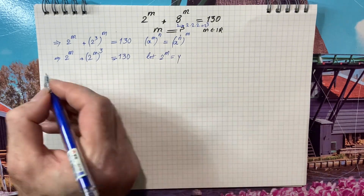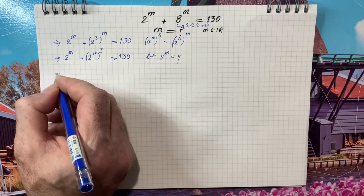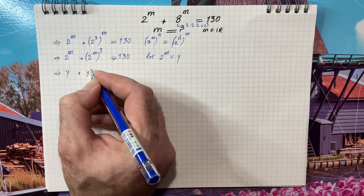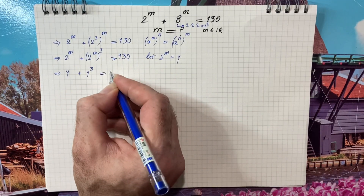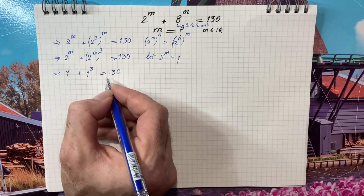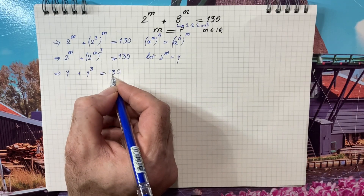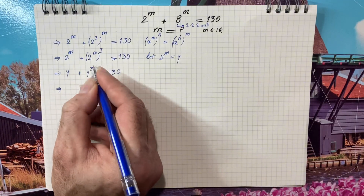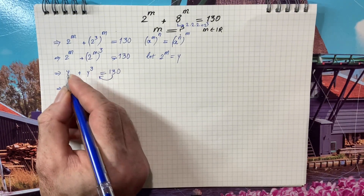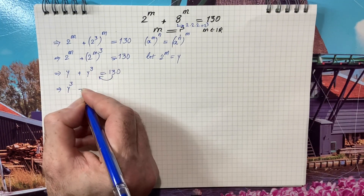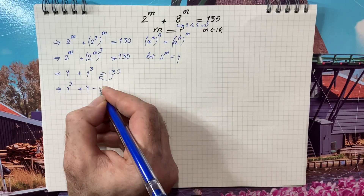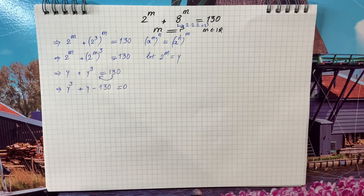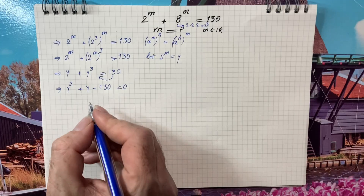Now I'm going to let 2 raised to m equal y. So the equation is going to be y plus y cubed equals 130. Moving 130 to the left hand side, it is going to be y cubed plus y minus 130 equals 0.